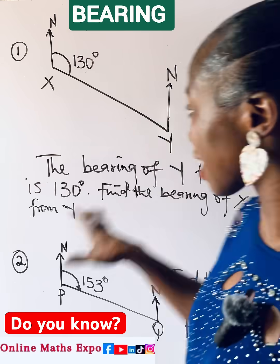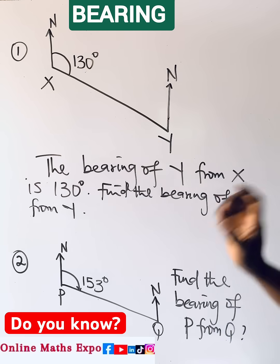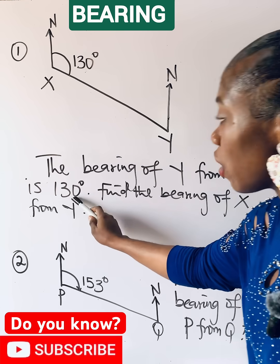The fastest thing to do when you see this kind of question in an exam, this is on bearing. Now look at the question, we are given this diagram. We are told the bearing of Y from X is 130 degrees.